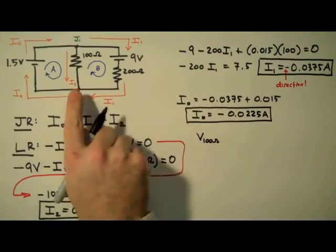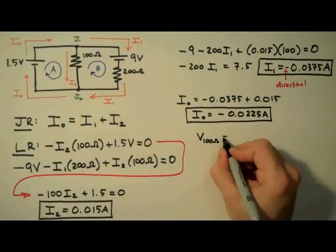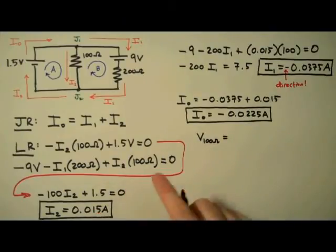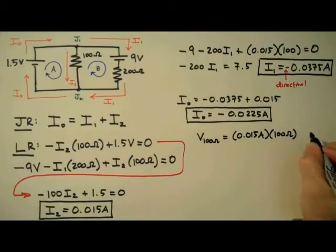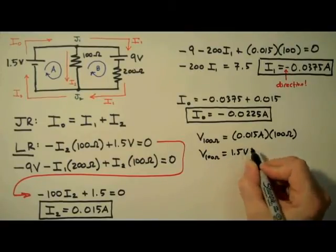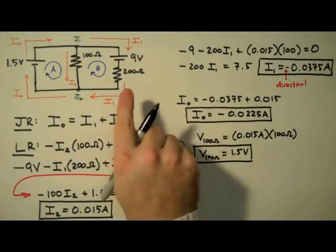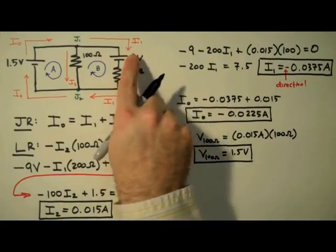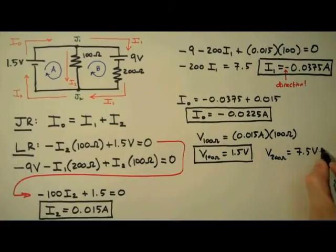Now that we have the currents in this circuit, we can determine the voltage drops across the resistors using the current and the resistance values — in other words, we're going to use Ohm's Law. For the 100 ohm resistor, using the 15 milliamp value, the voltage drop is 1.5 volts. And for the 200 ohm resistor, using that current, we get a voltage drop of 7.5 volts.